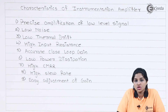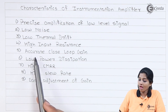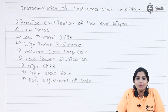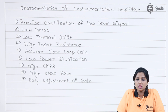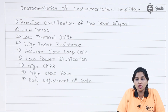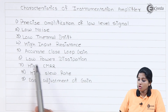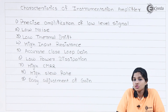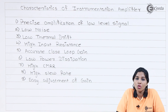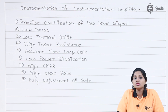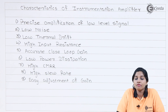The next requirement of the instrumentation amplifier is accurate closed loop gain. The gain of the instrumentation amplifier is not only required to be accurate but should also be easily adjustable. This adjustment can be done by using a potentiometer — by varying the value of the potentiometer, the gain can be easily adjusted. The next requirement is low power dissipation. The power consumption by the instrumentation amplifier should be as low as possible so that it produces less heat and improves battery life if the instrumentation amplifier works on a battery.